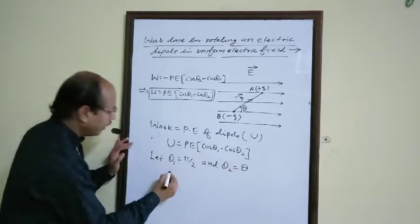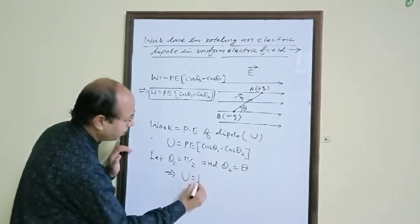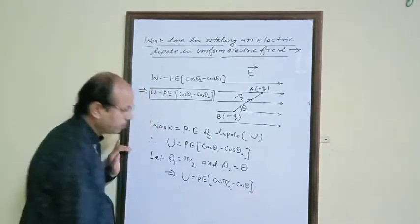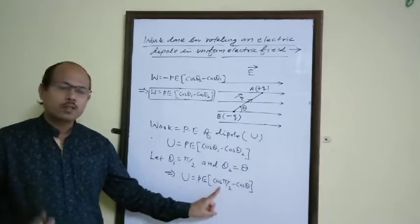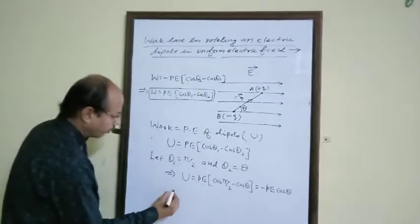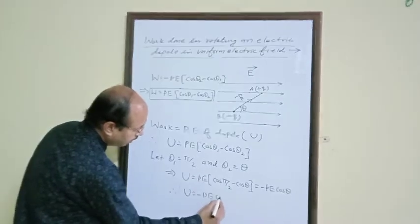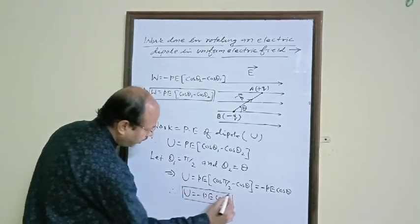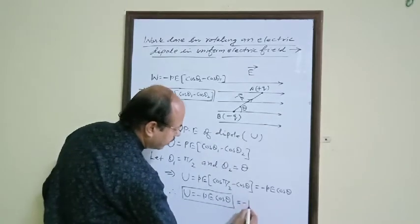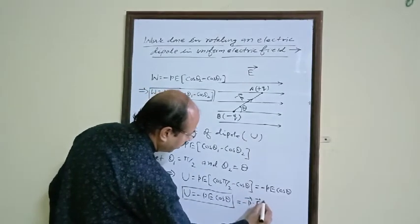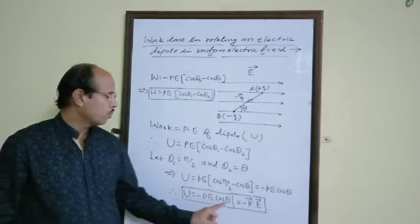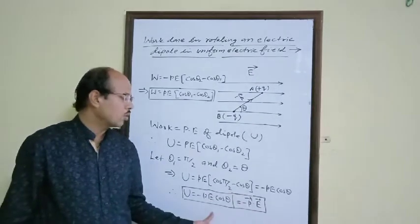Then the expression becomes U equals PE cos theta, and since cos(π/2) equals zero, the first term vanishes, giving U equals minus PE cos theta. Using the concept of scalar product, this can also be written as U equals minus P dot E. This is the expression for potential energy of the dipole in uniform electric field.